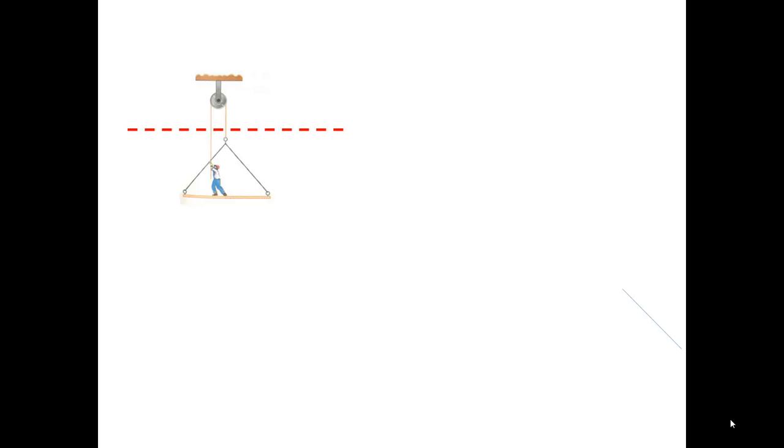For the first case, the free body diagram will involve the part of the structure that is below the dashed line.